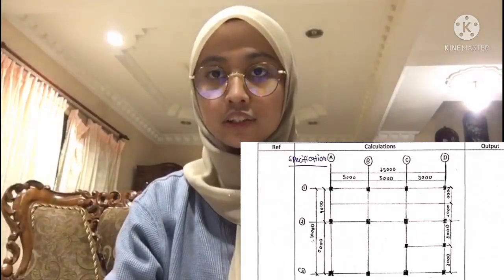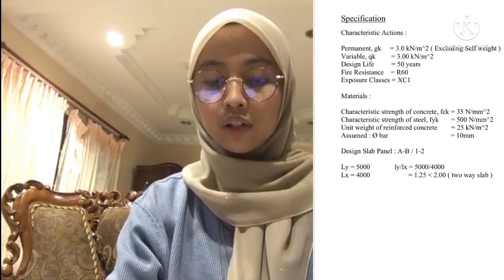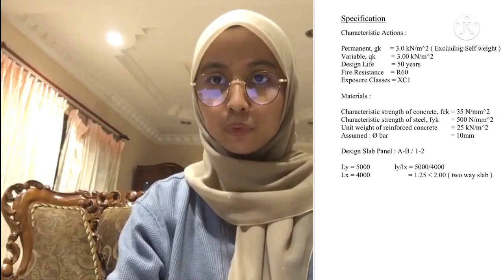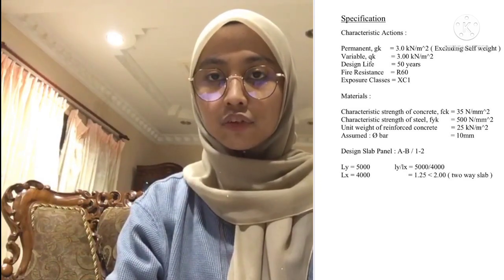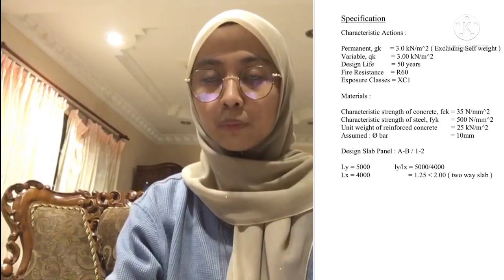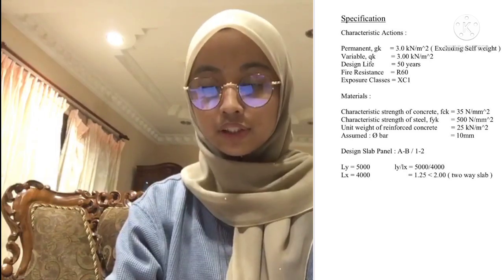The same applies for the remaining panels A, B, C, D with LY values and 1, 2, 3 in LX. Specification: characteristic actions — permanent GK 3.0 kN/m² excluding self-weight, variable QK 3.00 kN/m², design life 50 years, fire resistance R60, exposure class XC1. Materials: FCK = 35 N/mm², FYK = 500 N/mm², unit weight of reinforced concrete 25 kN/m³, assumed bar = 10 mm.